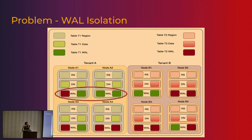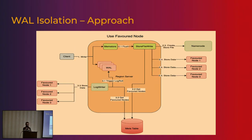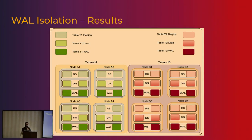The next problem we solved is WAL isolation, which comes into play in the write path. You need isolation of WALs to give throughput guarantees for different tenants. When a WAL is being written, you again make use of the favored nodes stored in metadata — you read them and ensure that WAL data is written only to nodes belonging to that particular tenant. This is exactly the same concept as data isolation, and with this we were able to solve the WAL isolation aspect.